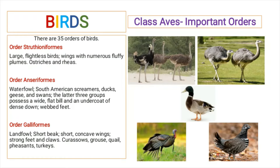Order Anseriformes includes waterfowls, South American screamers, ducks, geese, and swans. They possess a wide flat bill, webbed feet, and the undercoat of feathers is very dense. Order Galliformes includes land fowl; they have a short beak and short concave wings, and their feet and claws are strong. It includes curassows, grouse, quail, pheasant, and turkeys.